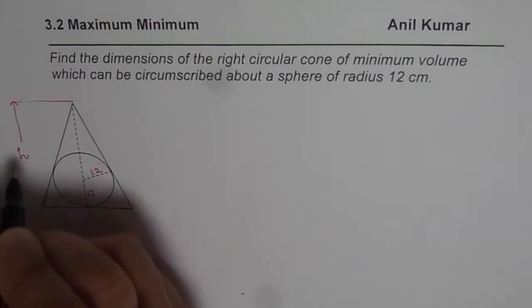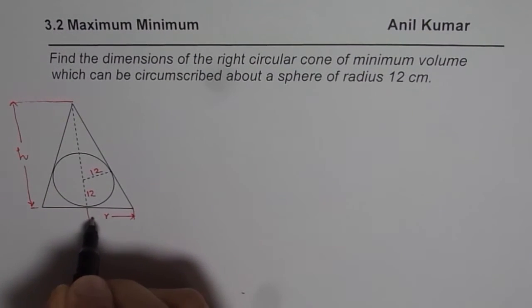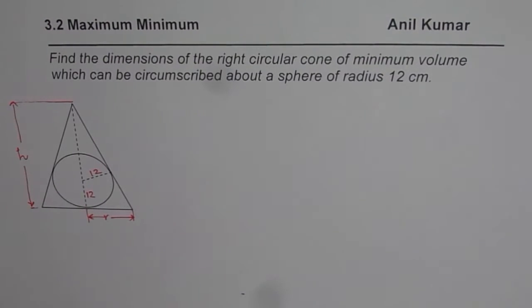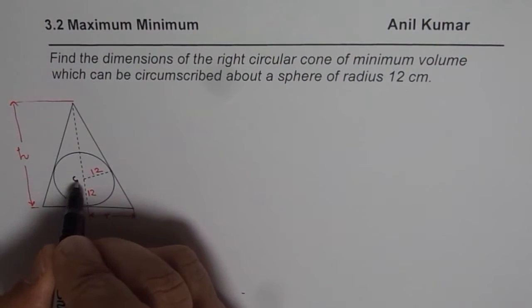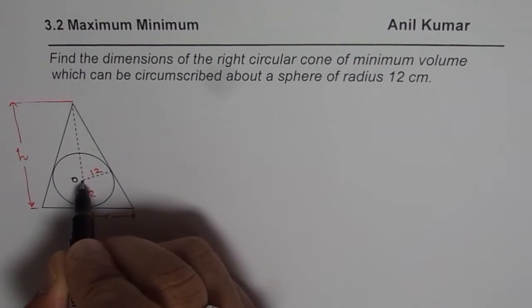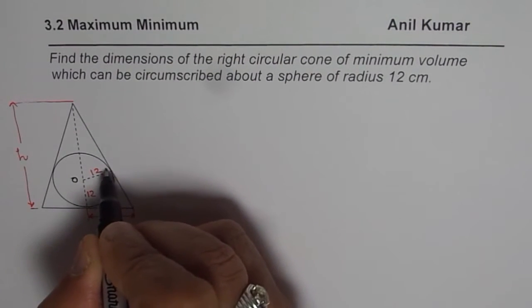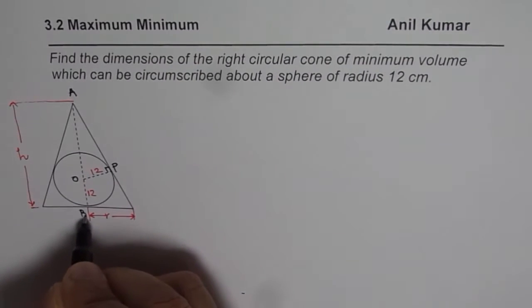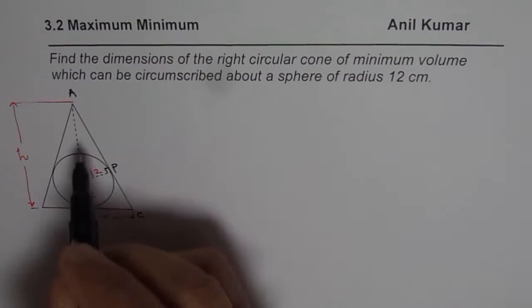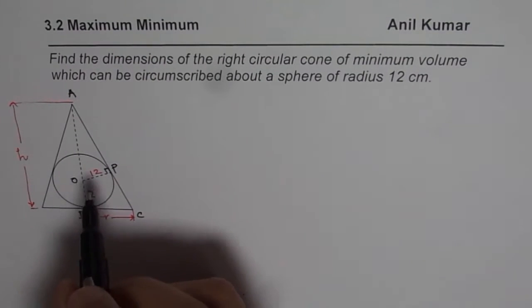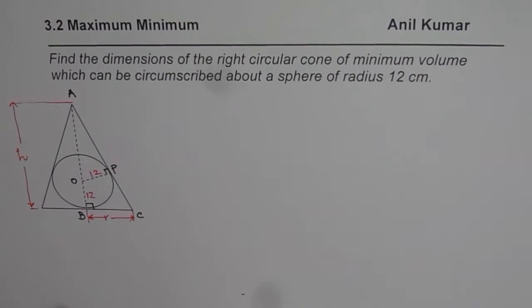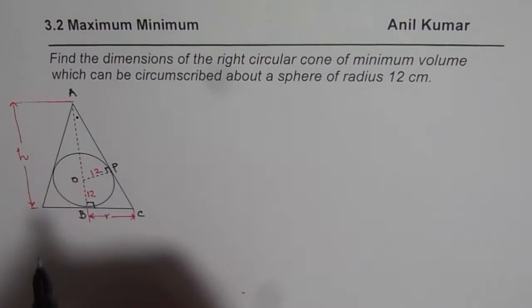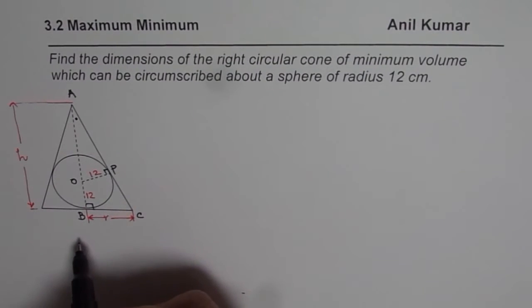Let height be h and radius be r. The center of the sphere drawn to the surface of the cone forms tangents, so that angle is 90 degrees. Let's call this tangent point P, and the big triangle as A, B, and C. Triangle ABC is a right triangle, and it is similar to triangle APO, which is also a right triangle, since both share angle A and each has a 90-degree angle.